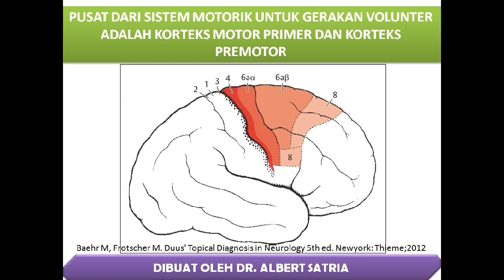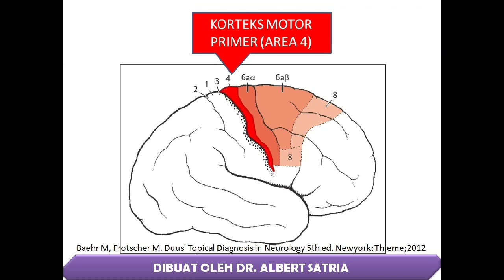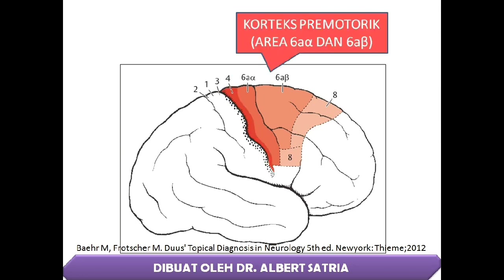Pusat dari sistem motorik untuk gerakan voluntar adalah Cortex Motor Primer dan Cortex Premotor. Ini adalah area Cortex Motor Primer atau area Broadman 4. Ini adalah area Cortex Premotorik atau area Broadman 6A Alpha dan 6A Beta.